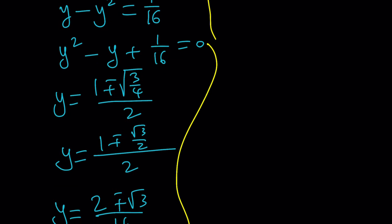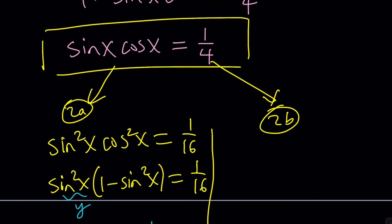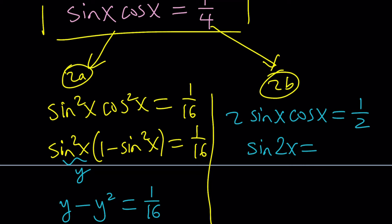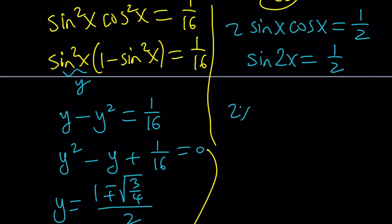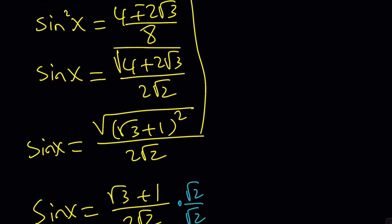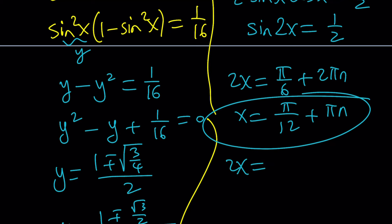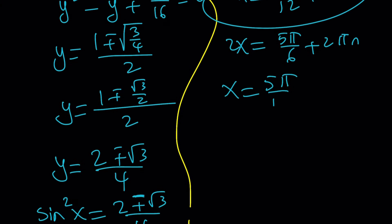For method 2b: whenever you see sine x times cosine x, you should immediately double both sides, because that gives you the double angle formula. The left-hand side becomes sine 2x equals 1/2. So 2x equals π/6 plus 2πn, giving x equals π/12 plus πn. Or 2x equals 5π/6 plus 2πn (since sine of 5π/6 also equals 1/2), giving x equals 5π/12 plus πn. Setting n to 0 gives 5π/12; setting n to 1 gives 17π/12.